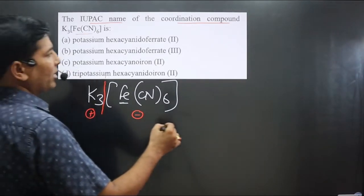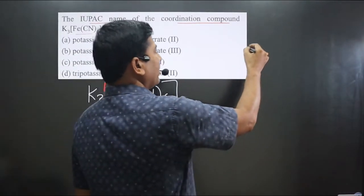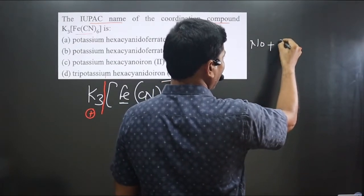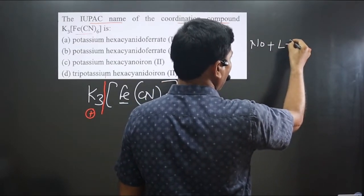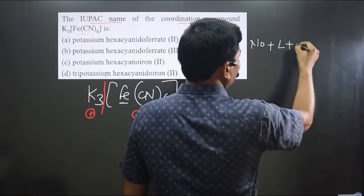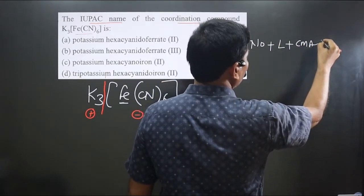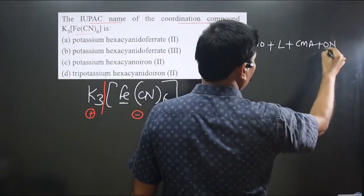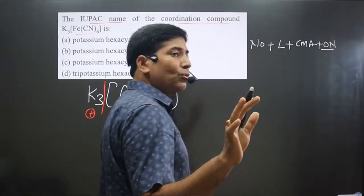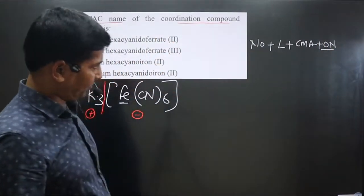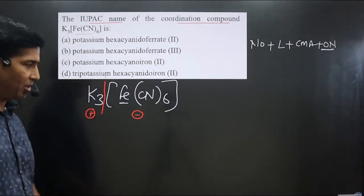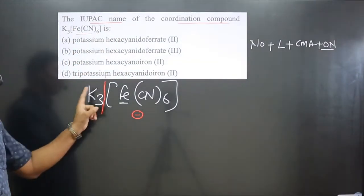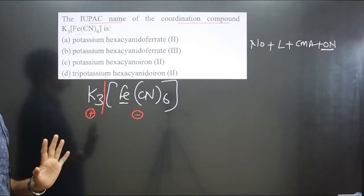Always follow this order: first mention the number of ligands, then the type of ligands, then the central metal atom, and then write the oxidation number of the central metal atom in Roman numerals. Name the cationic portion first, followed by the anionic portion.